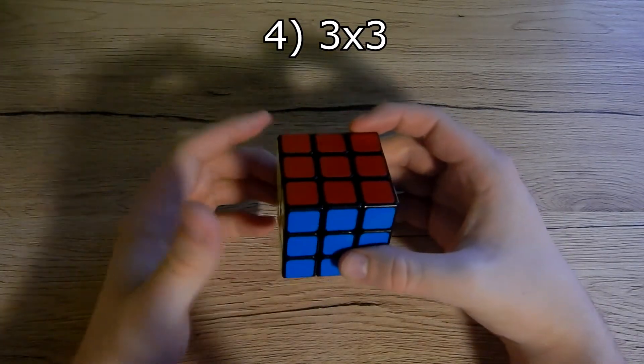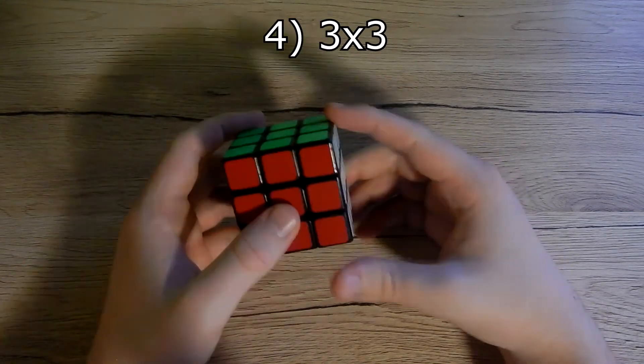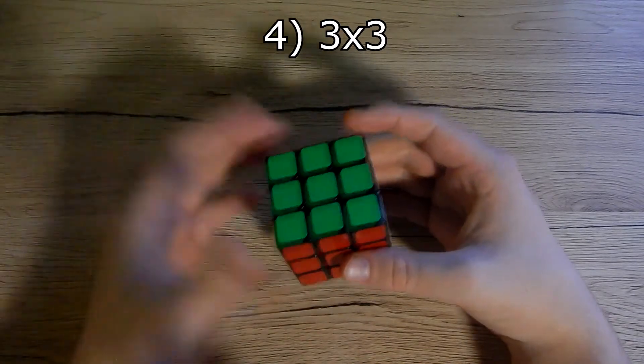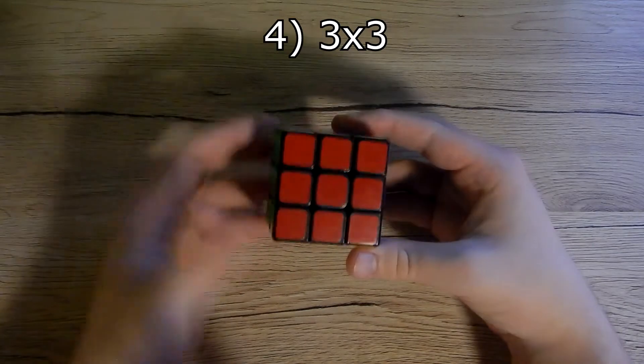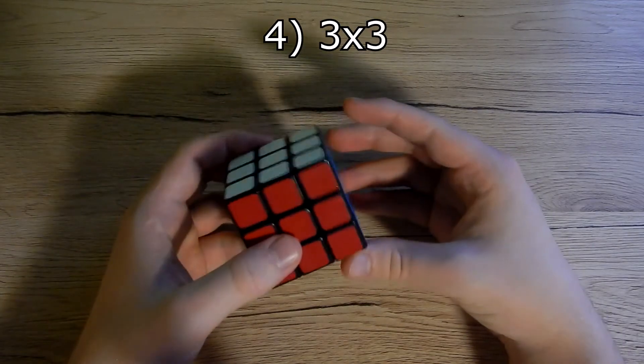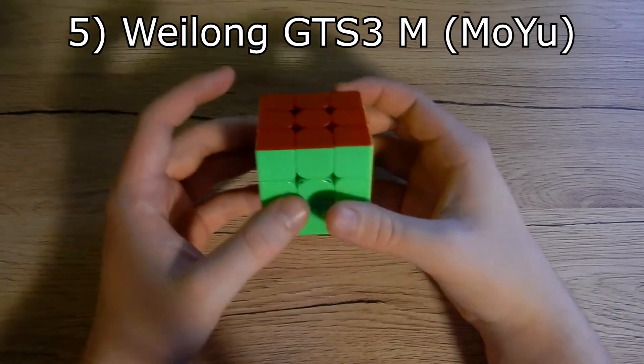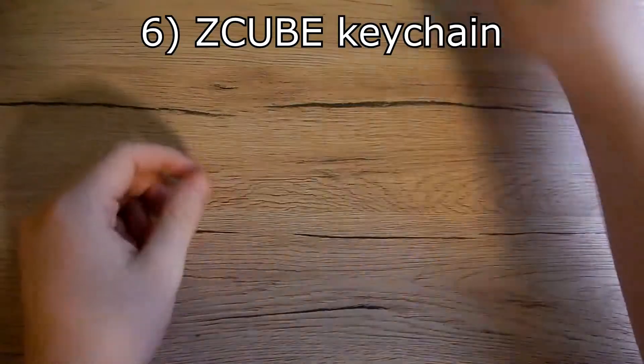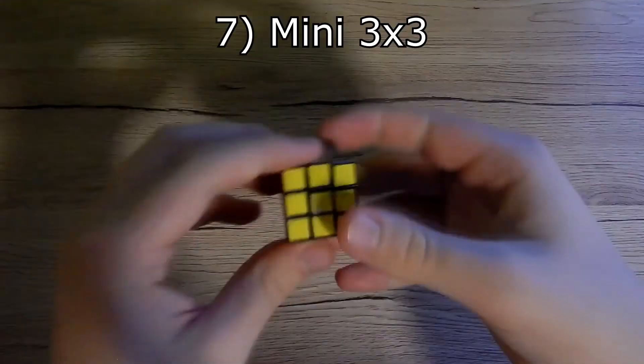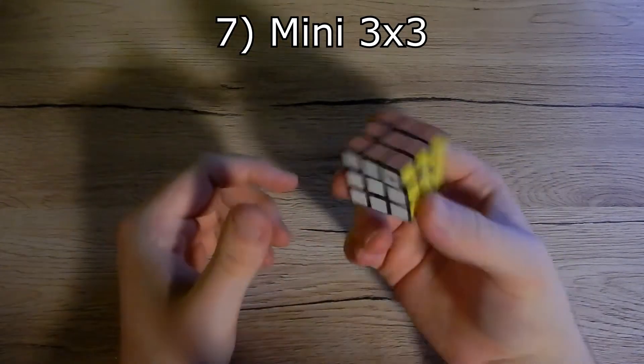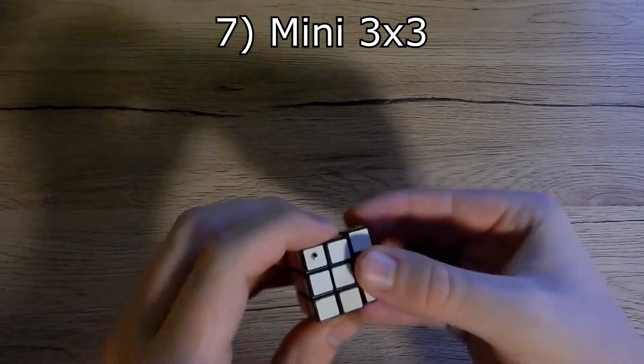Next we have 3x3 which I bought after that one, and it was my main until it popped one time. Next we have my main cube which is a Weilong GTS 3M. Next we have this Z cube keychain, and I have this mini cube too, but it's very hard turning and the colors are awful.